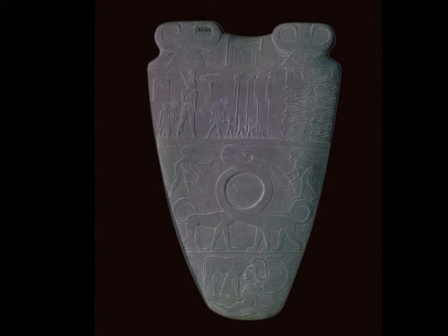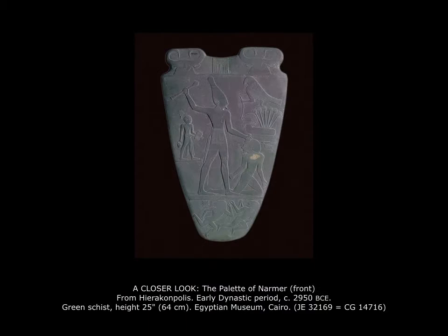The unification of Egypt is believed to be symbolized in this artifact, now called the Palette of Narmer. Narmer is seen in the register at the top far left — he's the big figure wearing the crown of Lower Egypt in the north. On the other side, if we turn and look at the back briefly, we'll see that he's wearing the crown of Upper Egypt.